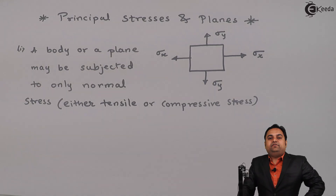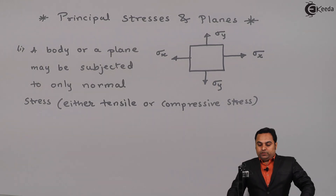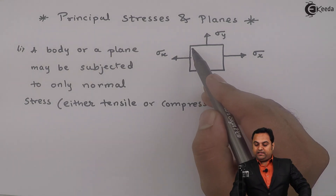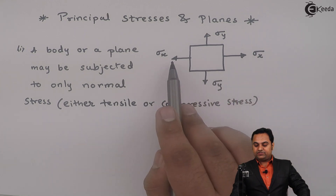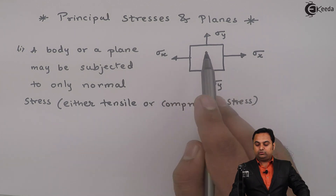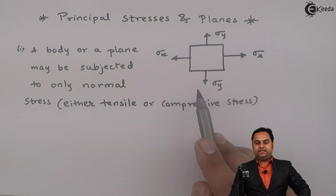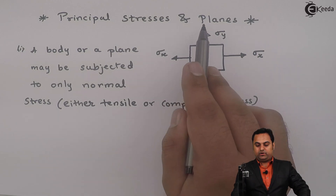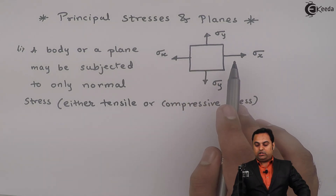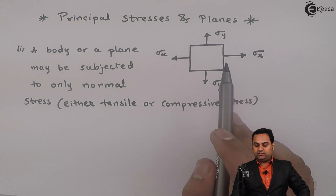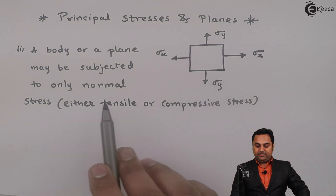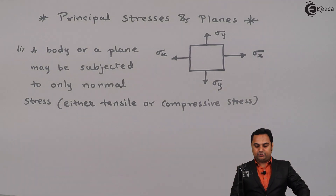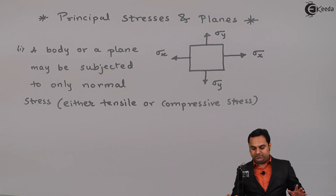In this example, a plane is subjected to stress along two perpendicular directions, that is along X and Y. Along X the stress is Sigma X, along Y it is Sigma Y, and they are called as normal stresses. So, a plane may be subjected to only normal stress — normal stress means either tensile or compressive stress.